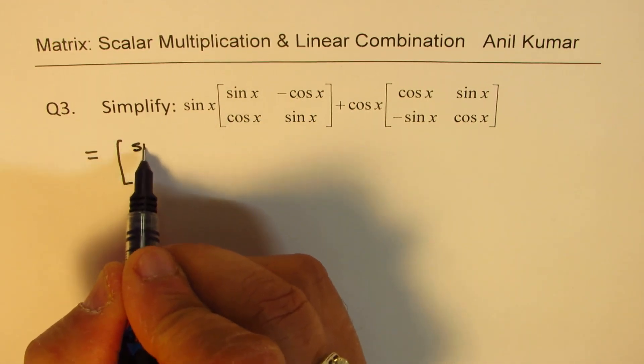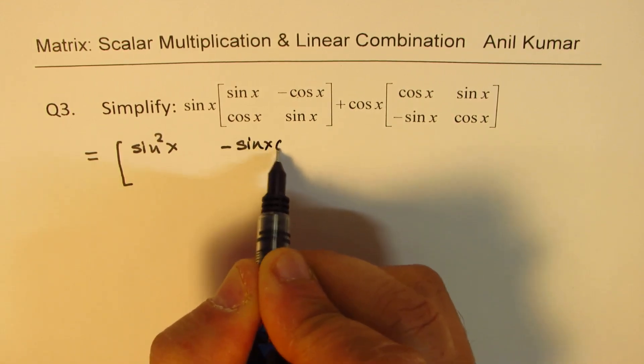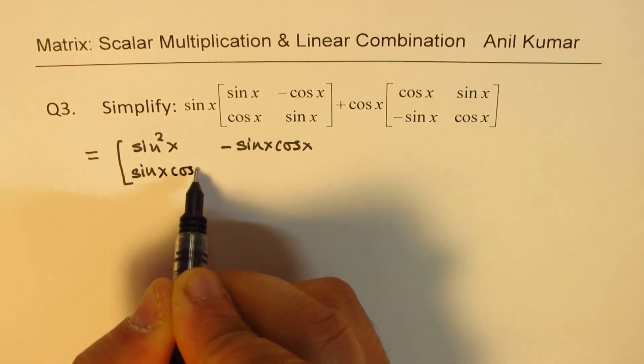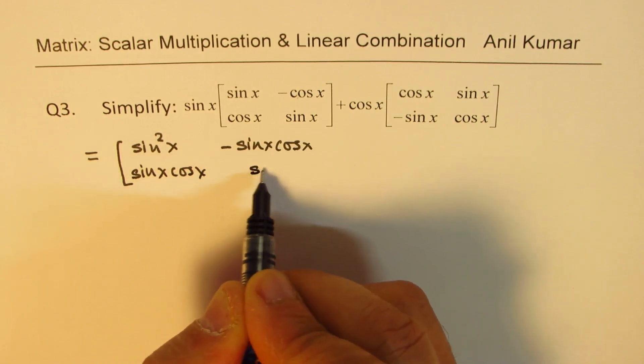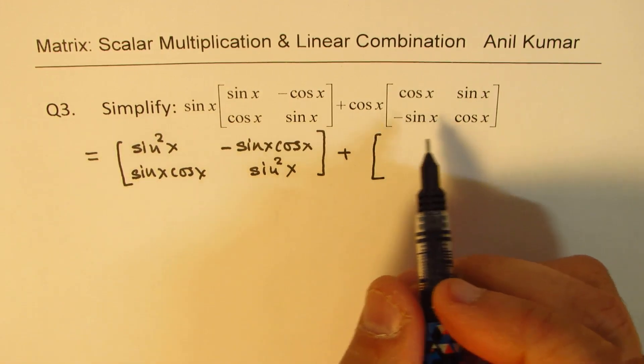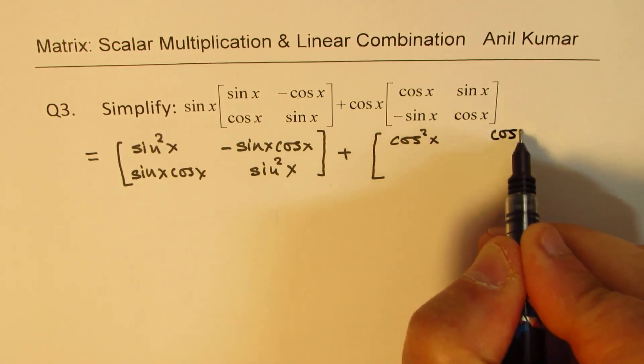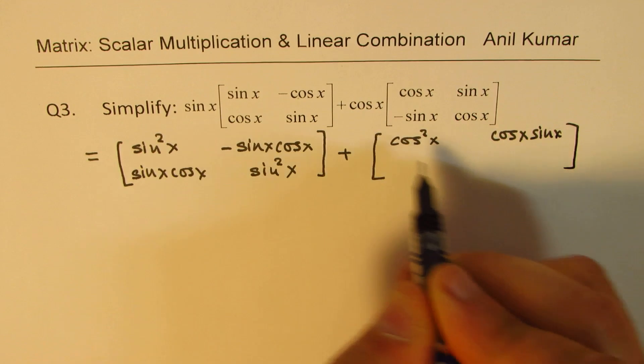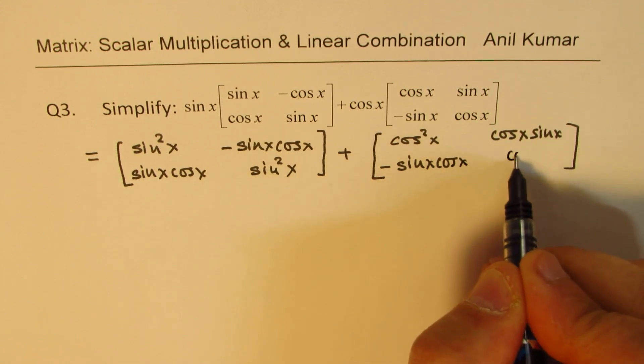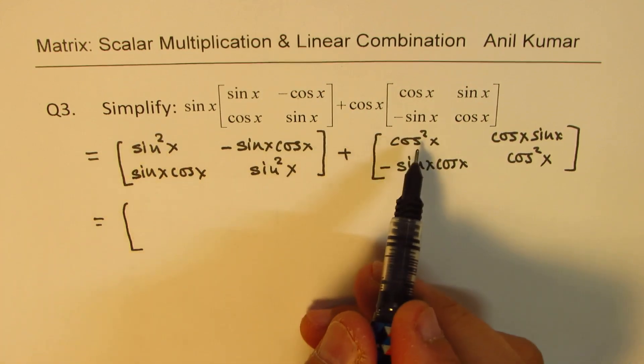So basically in the first part sine x is being multiplied to each and every element of the matrix. So we get sine squared x and here we get minus sine x cos x, here we get sine x cos x, and here we get sine squared x. And to this we are adding another two by two matrix which is cos squared x, here we get cos x sine x, you get minus sine x cos x, and we get cos squared x.